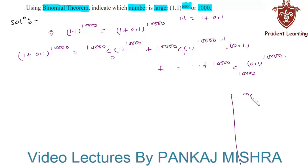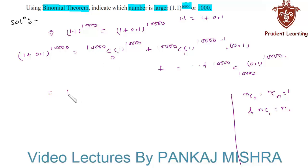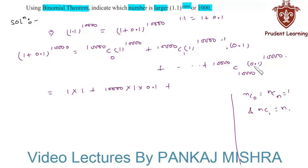We know that nC0 = nCn = 1 and nC1 = n. Applying these formulas: 10,000C0 is 1, and 1 raised to anything is 1, so the first term is 1. The second term: 10,000C1 = 10,000, and 1 raised to anything is 1, so that term equals 10,000 × 0.1 = 1000, plus other positive terms.